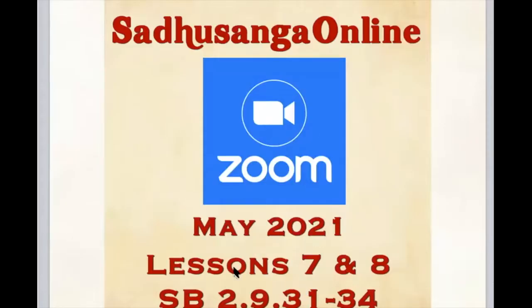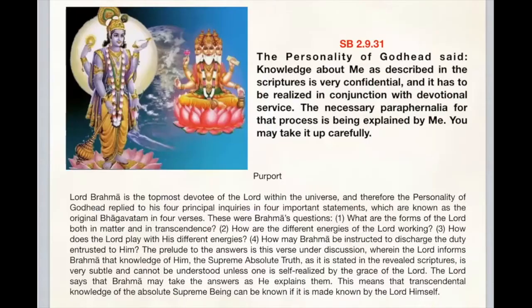We're studying May 2021, lessons seven and eight — Srimad Bhagavatam second canto, chapter nine, texts 31 through 34. We will be reading different parts of the same purports since these are very long purports and only a few verses. The first verse and part of the purport — the personality of Godhead said: knowledge about me as described in the scriptures is very confidential, and it has to be realized in conjunction with devotional service. The necessary paraphernalia for that process is being explained by me — you may take it up carefully.